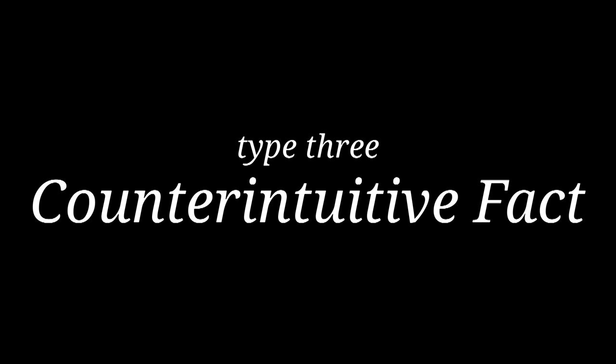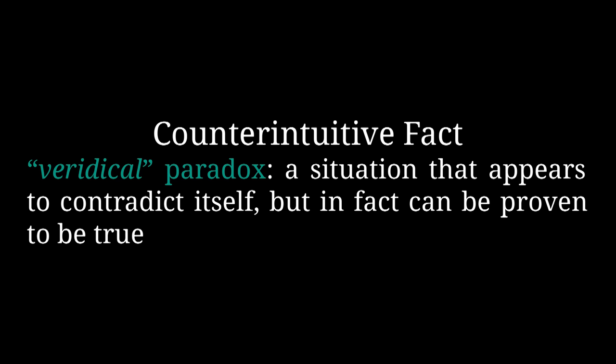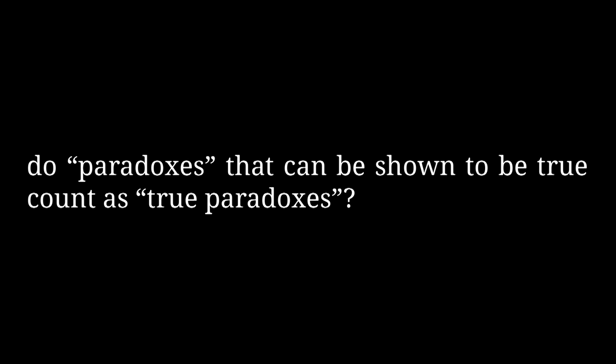The third type of paradox is what I'm going to call a counterintuitive fact, or what you might see referred to as a veridical paradox. These are things that look like logical contradictions but really are just provably true facts. A lot of people don't think things that can be definitively resolved should count as paradoxes — but that's the benefit of dividing paradoxes into distinct groups. We can acknowledge this is a different kind of thing from logical contradictions, while also acknowledging it's often called a paradox.